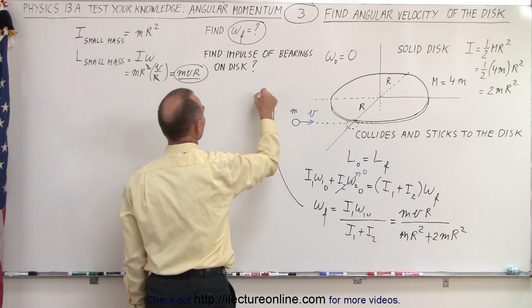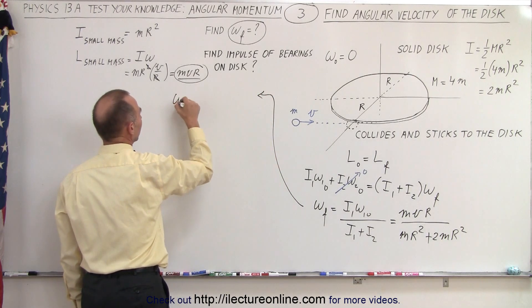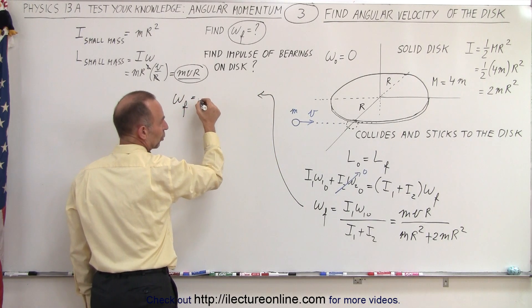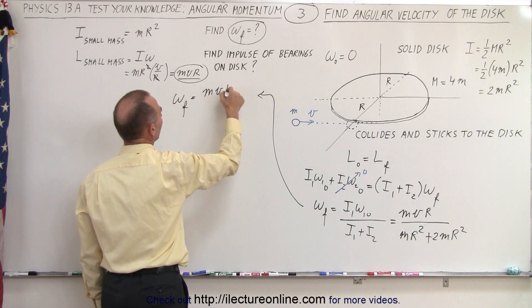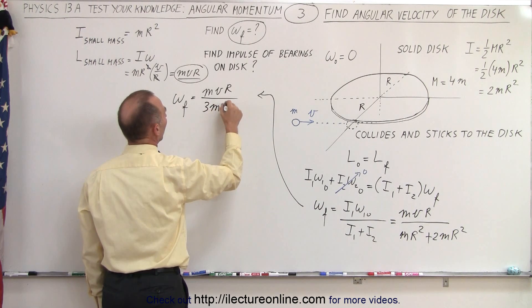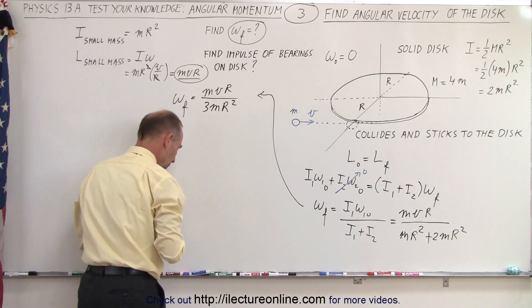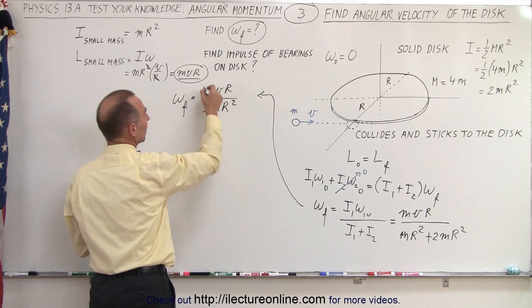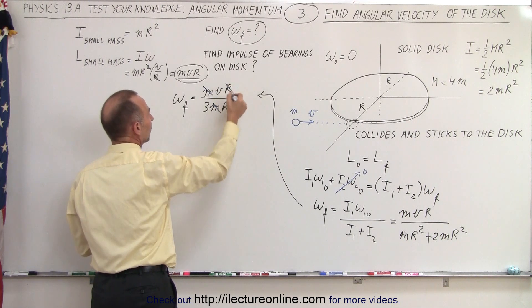So then continuing over here, you can see that ω_final will be equal to mvr divided by, sum those together, that would be 3mr². And now when we cancel some things out, we can cancel the mass and cancel one of the r's.